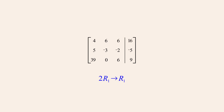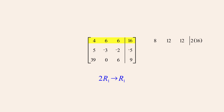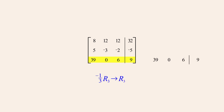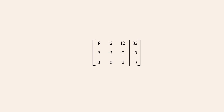Let's perform a couple of scale operations and see how the matrix changes. We will start by using a scale operation to multiply row 1 by the constant 2, and then perform a second scale operation to multiply row 3 by negative one-third. Since multiplying both sides of an equation by a non-zero constant does not affect its solutions, the scale operation always produces an equivalent system of equations.